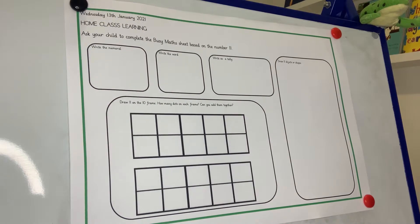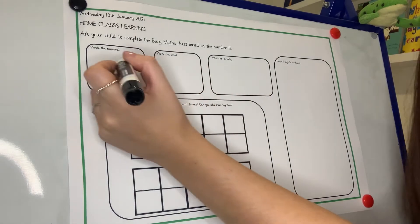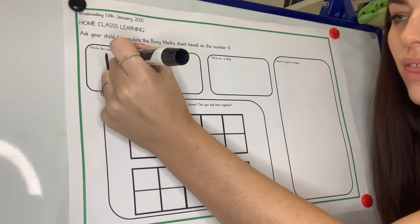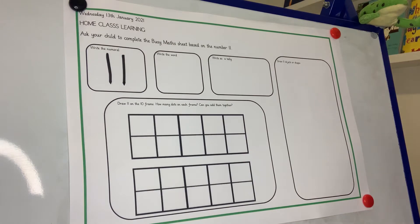The first box says that we have to write the number 11. So you are going to practise writing the number 11 on your sheet. Now remember, the number 11 is made up of 10 and 1, and it looks like this. Number 11.